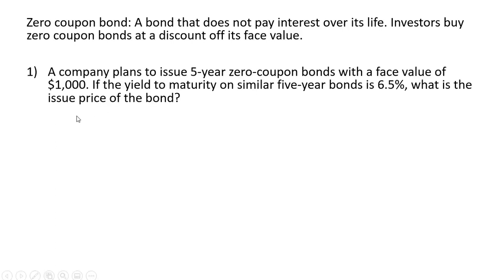Problem one: a company plans to issue five-year zero coupon bonds with a face value of $1,000. If the yield to maturity on similar five-year bonds is 6.5%, what is the issue price of the bond?